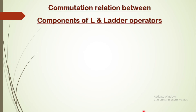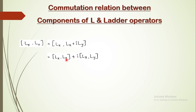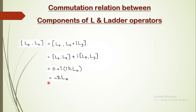Now let us discuss the commutation relations between the components of angular momentum and the ladder operators — that is Lx, Ly, Lz with L+ and L−. First, consider [Lx, L+]. When you substitute and simplify, Lx commutes with Lx giving zero, plus i times [Lx, Ly] gives i·ℏ·Lz by cyclic nature. Solving, i times i equals i² equals minus one, so [Lx, L+] equals −ℏ·Lz. Clearly, Lx and the raising operator do not commute, so simultaneous measurement is not possible.